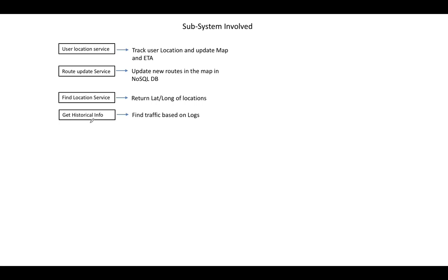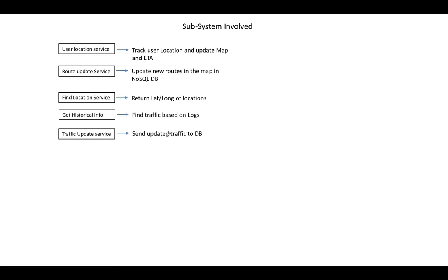Then we have the Get Historical Info Service. We can use past traffic logs at a particular location or time interval to find ETA. For example, if we know that between points A and B the traffic is heavier on weekends or Friday nights, we have this historical data and logs. Based on that data we perform analytics and return ETA to the user based on previous logs. That is the responsibility of this service.